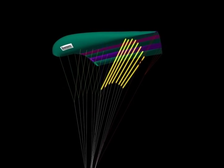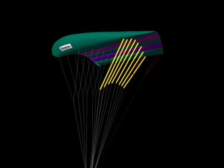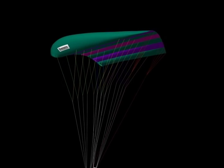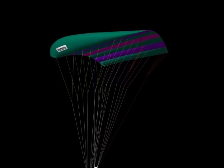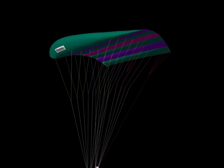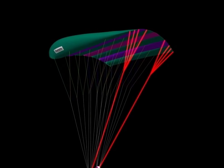And the D lines, highlighted here in orange. Finally, attached to the tail are the steering lines highlighted in red.